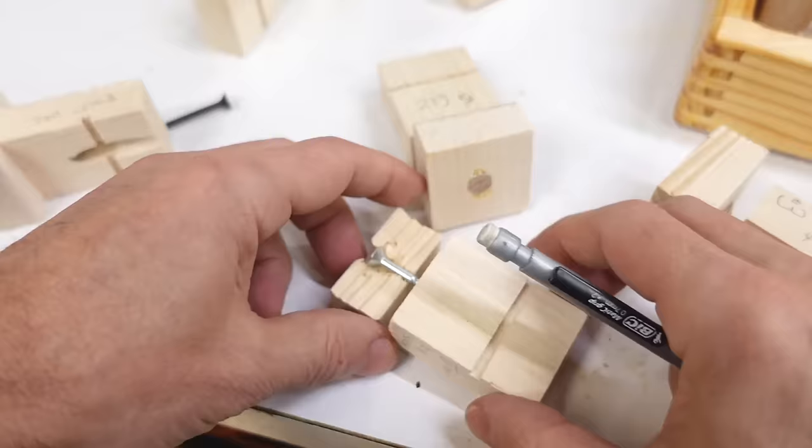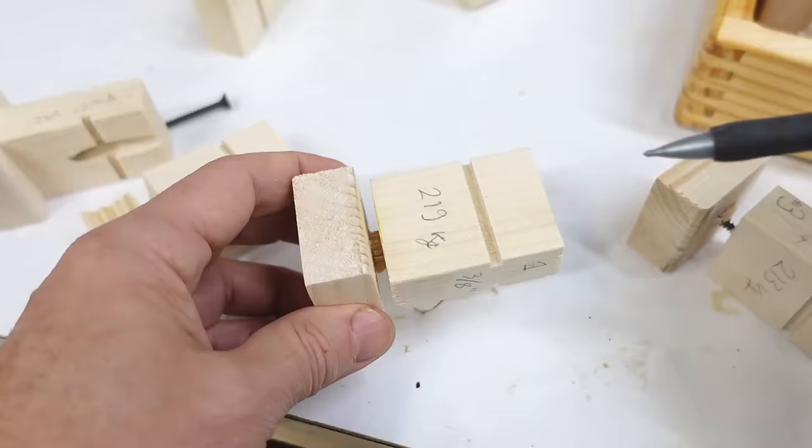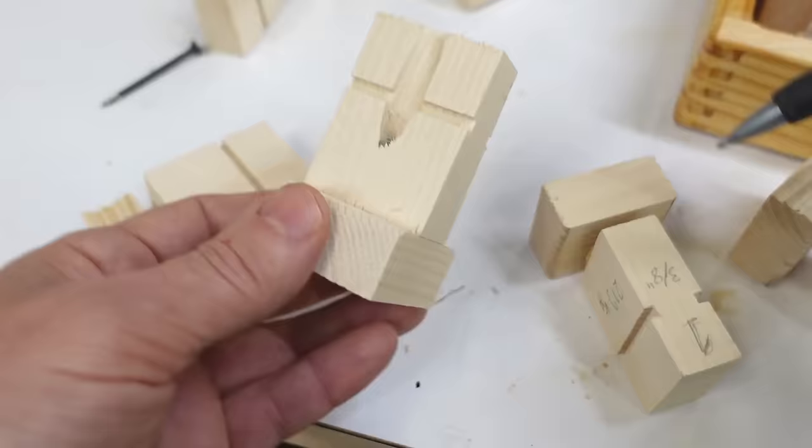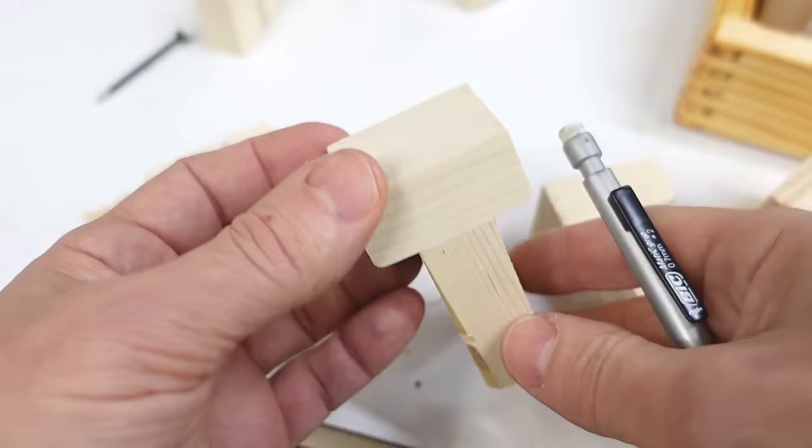Whereas, the dowel had the higher force and it didn't really pop apart until it got very close to the maximum force. So, that joint stayed good for the longest. But, with the head sinking in being such a problem, I'm wondering about pocket hole screws where the head is on end grain. So, maybe this will do a little bit better.